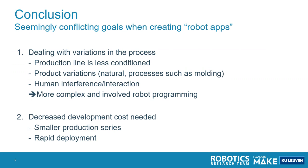In conclusion, I come back to my slide on the seemingly conflicting goals when creating robot apps. On one hand, we want to be robust against variations and deal with human interaction, requiring complex sensor-based control. And on the other hand, we need a decreased development cost of these applications due to the small production series.